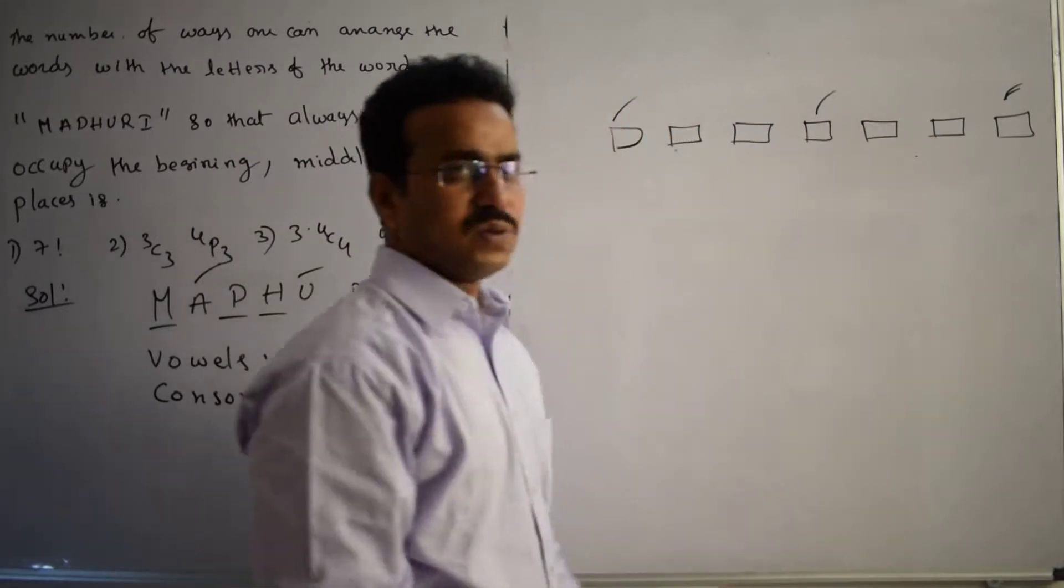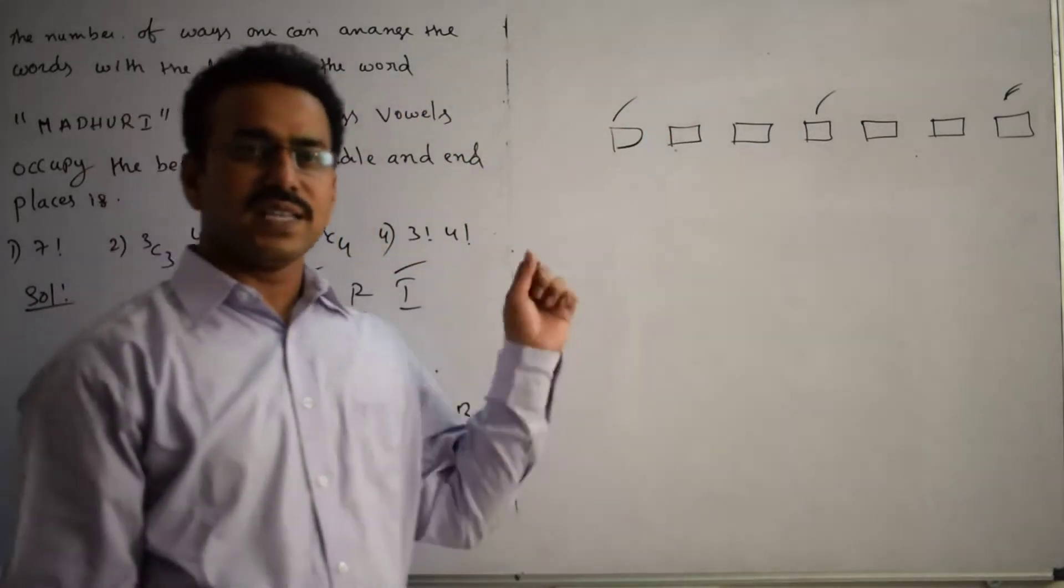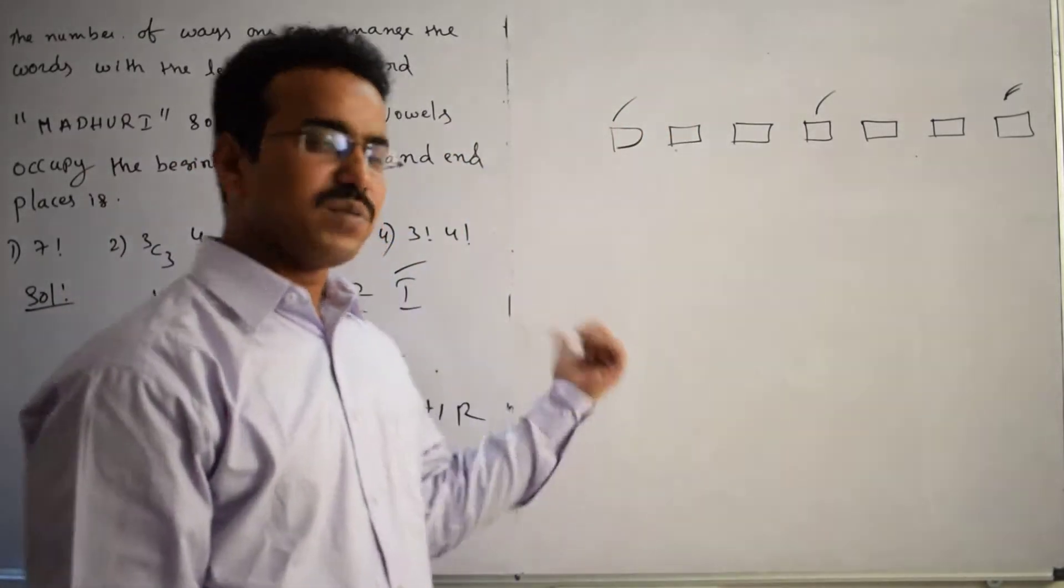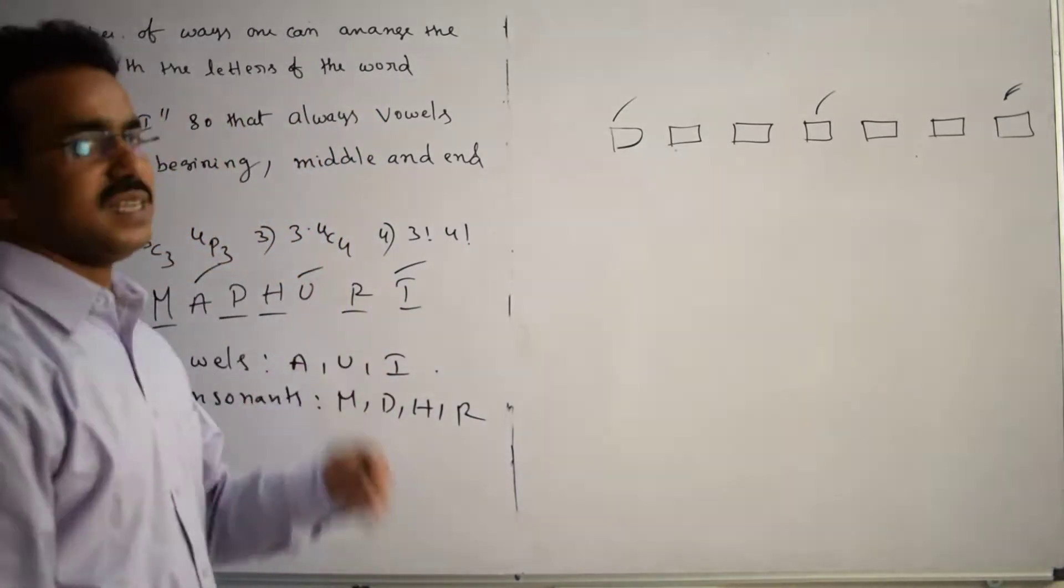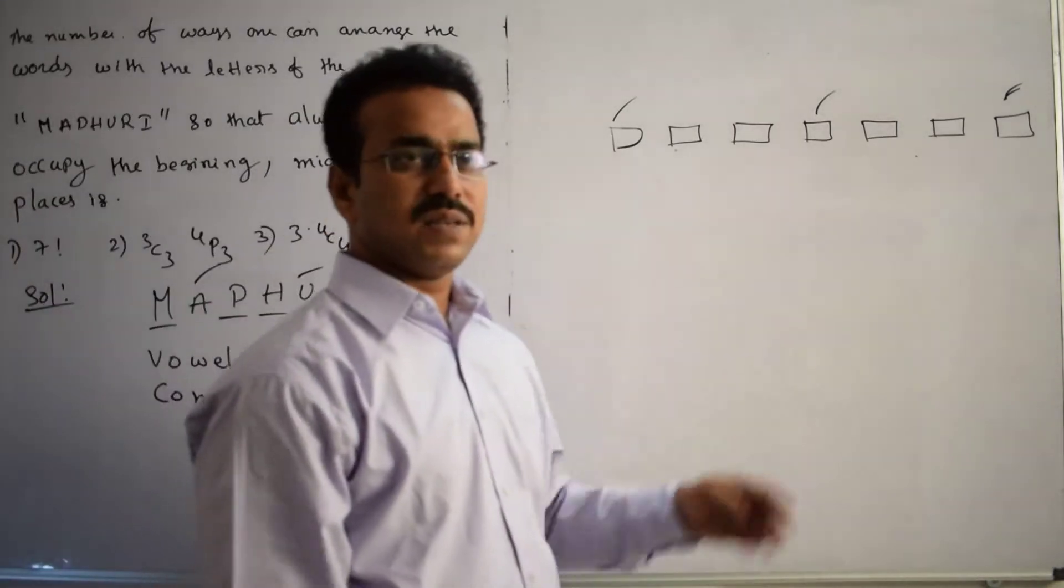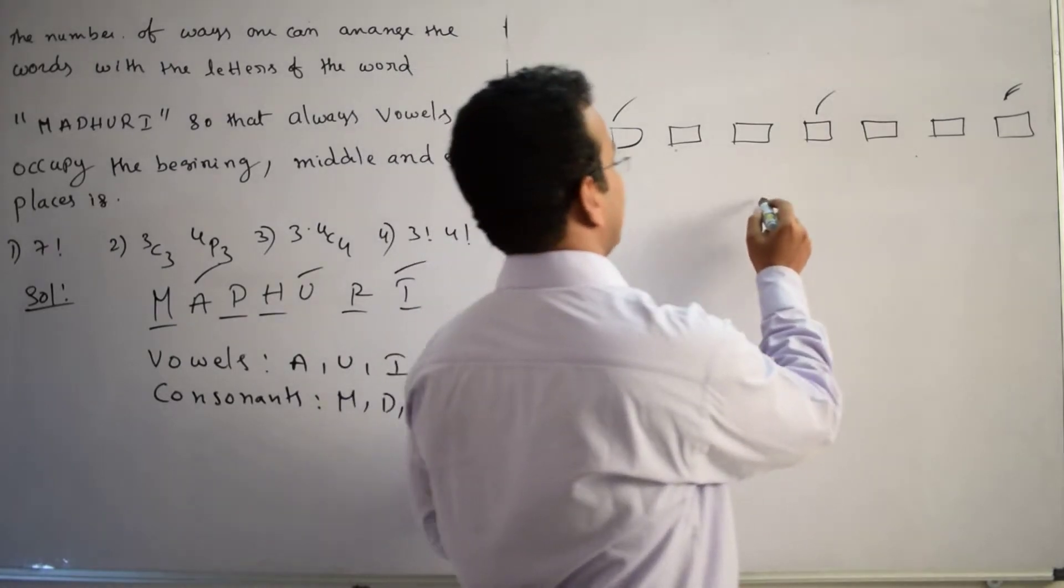In these 3 boxes we have to arrange vowels only. How many vowels are there? Three vowels. So in 3 boxes, 3 vowels can be arranged in 3 factorial ways.